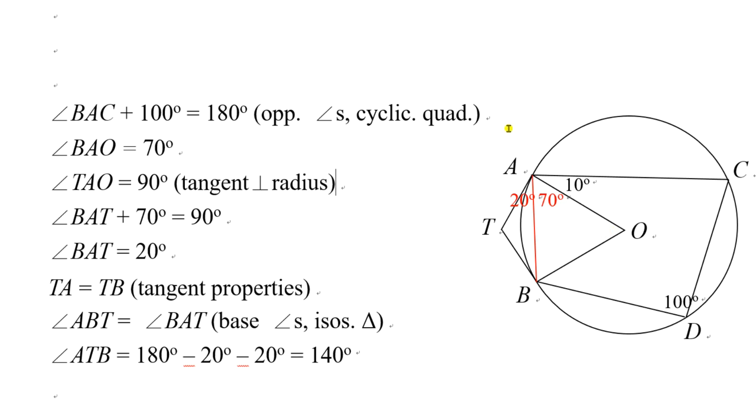And also TA and TB are equal in length because of tangent properties. Therefore, this is an isosceles triangle and hence angle TAB equals angle TBA. These angles are the same, both of them equal 20 degrees.